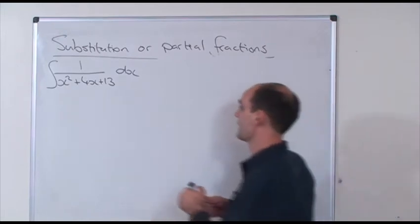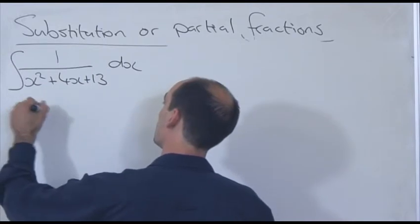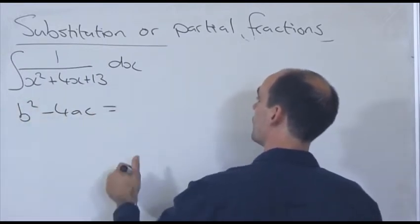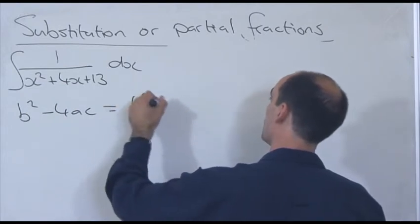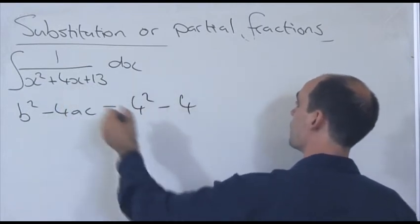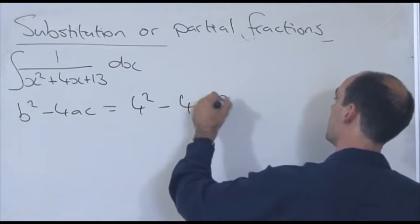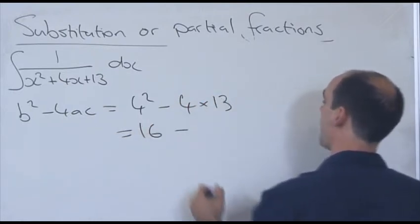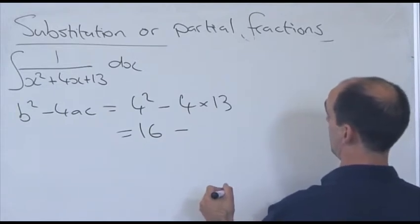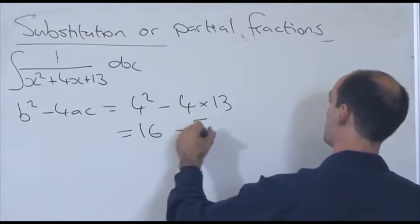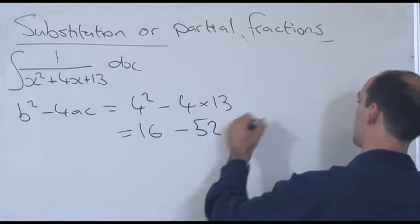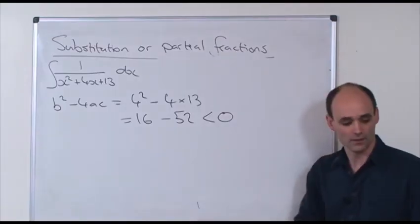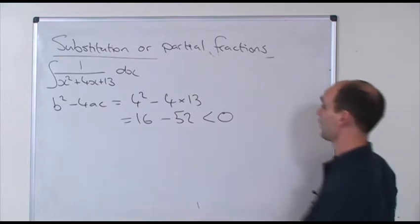Let's just check that's actually true. b squared minus 4ac is equal to — b is 4, so that's 4 squared minus 4 times a (which is 1) times c (which is 13). That's equal to 16 minus 52, so that's definitely less than 0. I can't factorise that expression, so I'm going to have to complete the square.